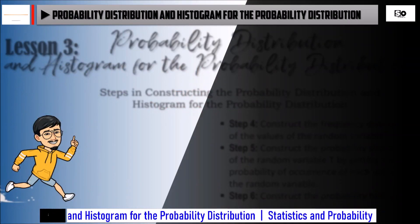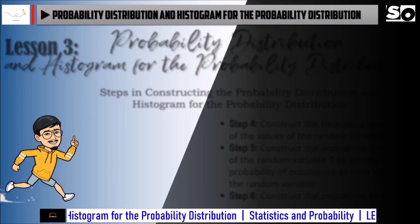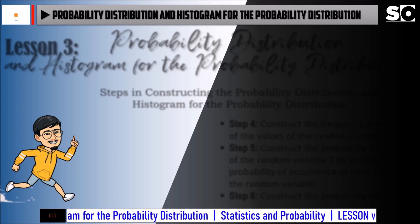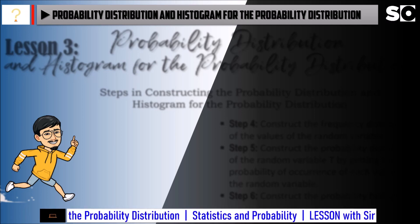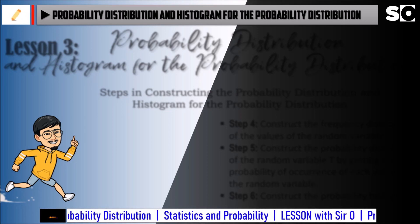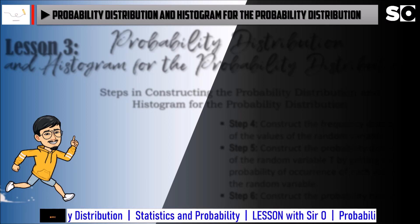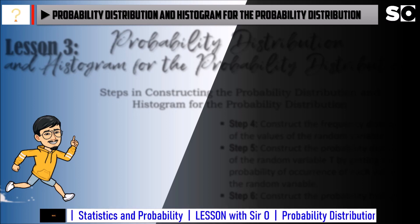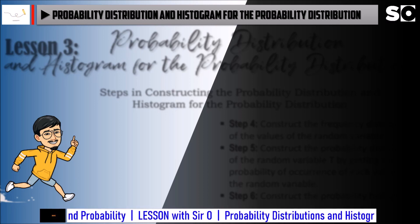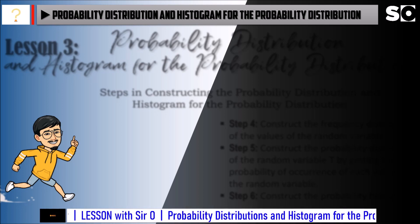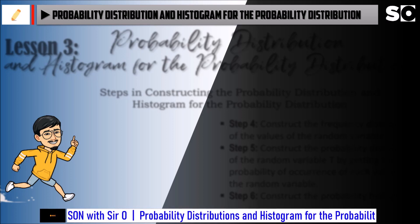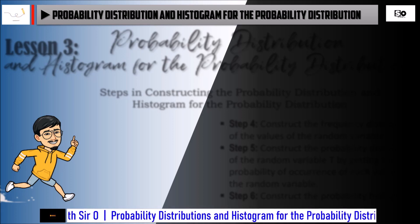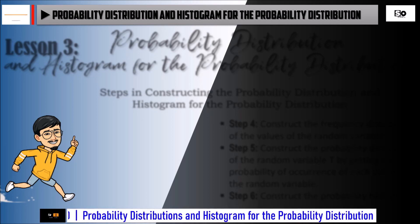Let us proceed to the probability distribution and histogram for the probability distribution. In the previous grade levels in studying mathematics, we have learned how to make a frequency distribution table given a set of raw data. In this part, you will learn how to construct a probability distribution. You already learned how to determine the values of discrete random variable. Constructing a probability distribution is just a continuation of the previous part. We just need to include additional steps to illustrate and compute the probabilities corresponding to a given random variable.